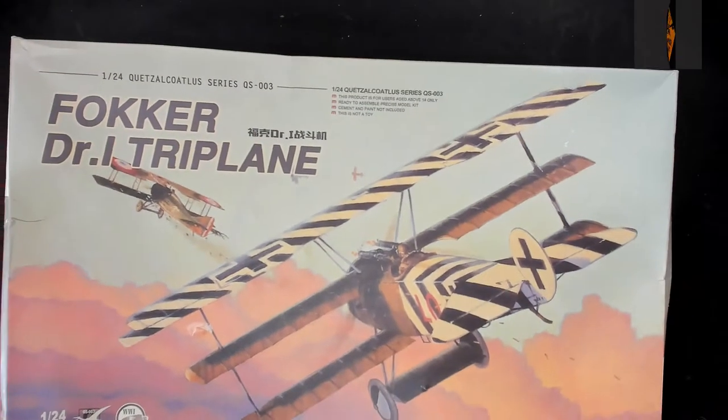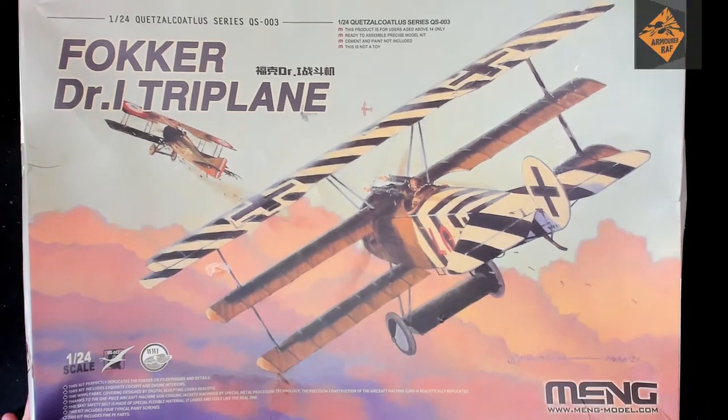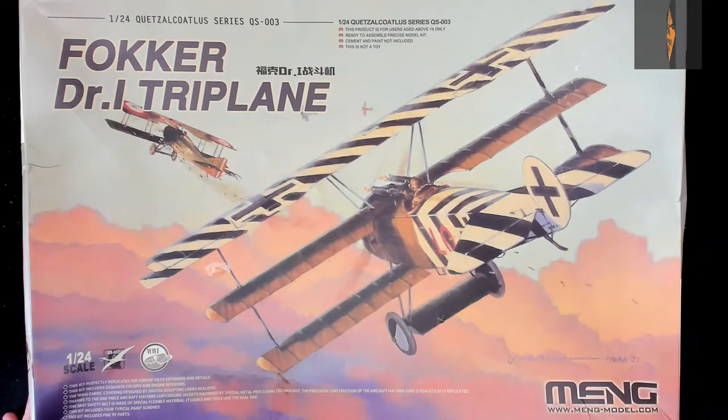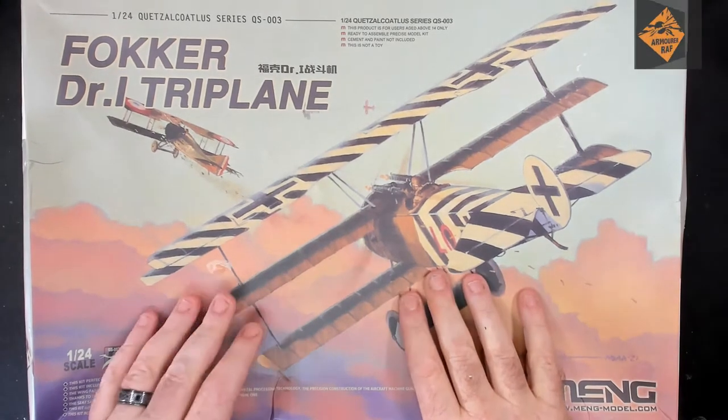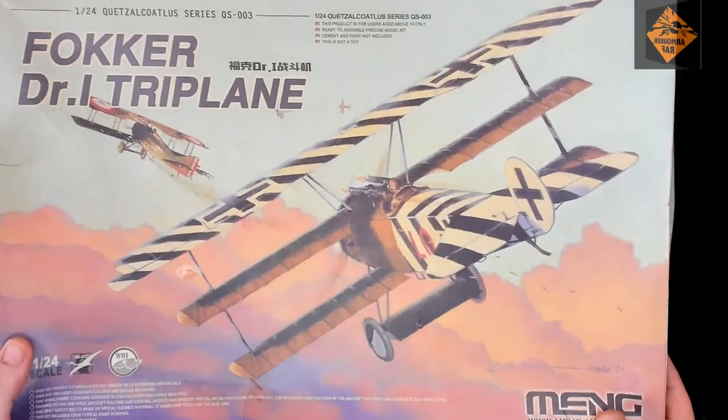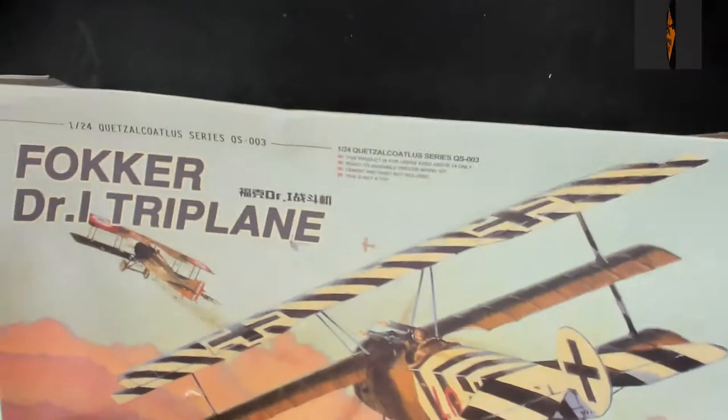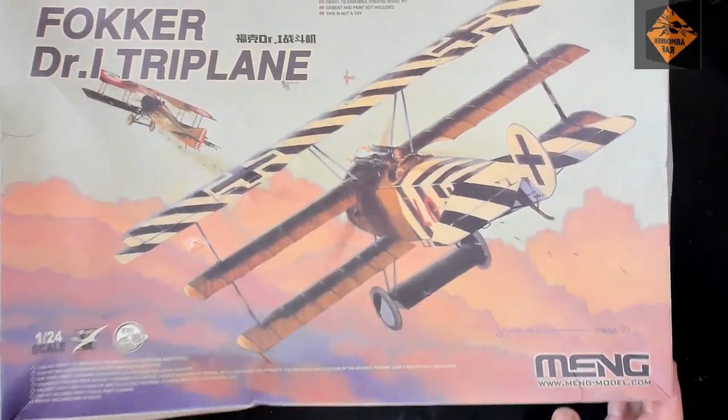This is going to be our next build - Meng's Fokker Triplane. I've already got the 1/32nd but I've also got the 1/24th. So this is the one without the Blue Max. Let me just move that to one side. Lovely box art. The box is a bit battered but there you go.